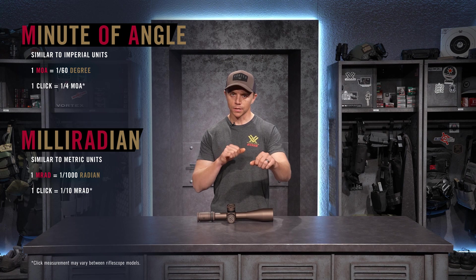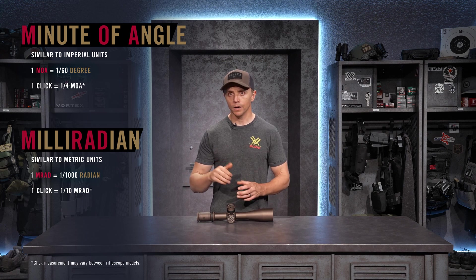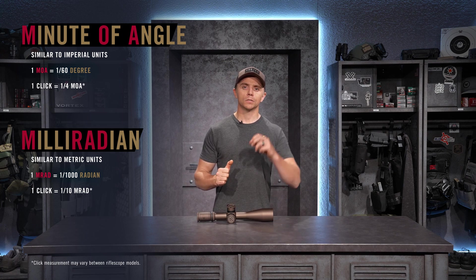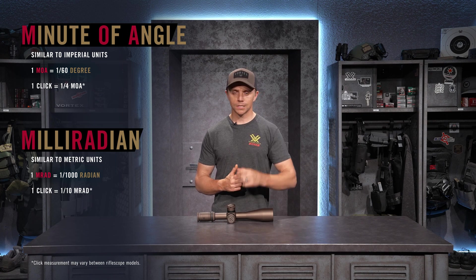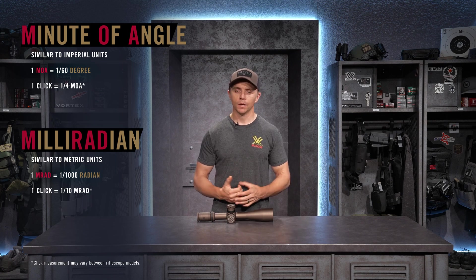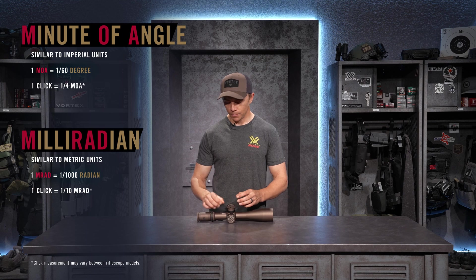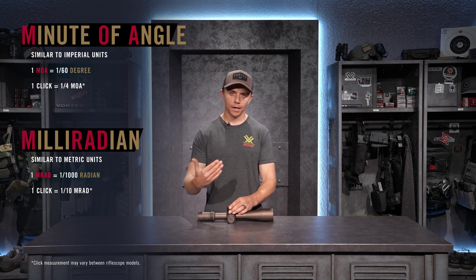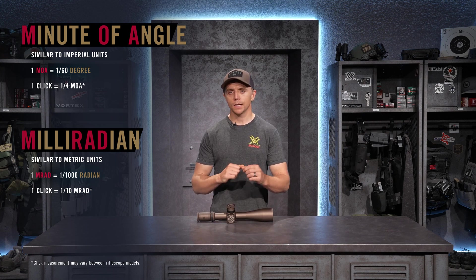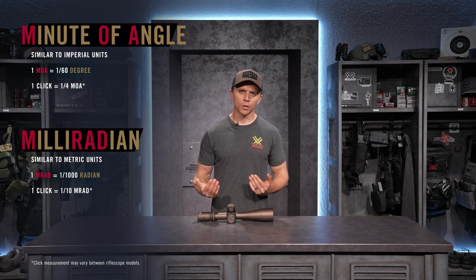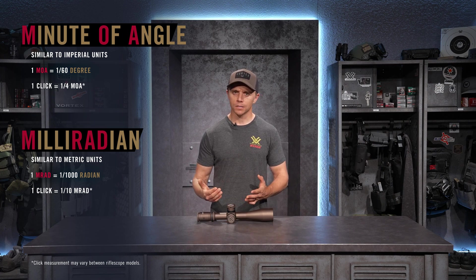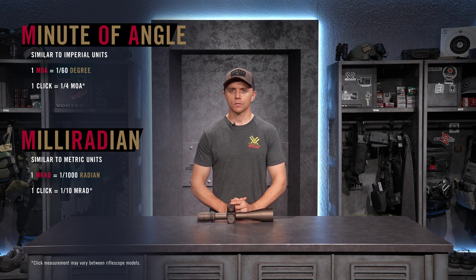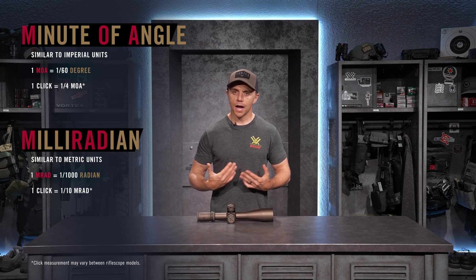As long-range shooters, we like to keep our position consistent and keep our head on the gun rather than pop it off to look at the elevation turret. With minute of angle optics you can dial up to ten and a half minutes and look at the numbers on the turret, but if you want to stay consistent and count clicks, you'll have to do a bit of math to figure out how many clicks equals ten and a half minutes.